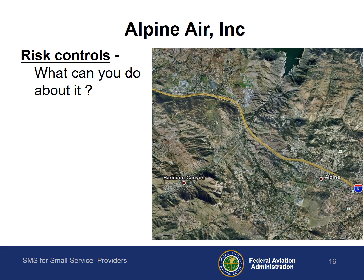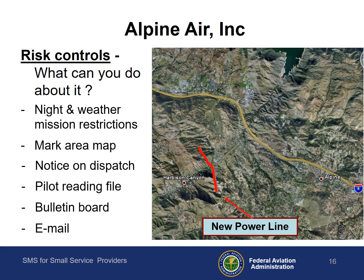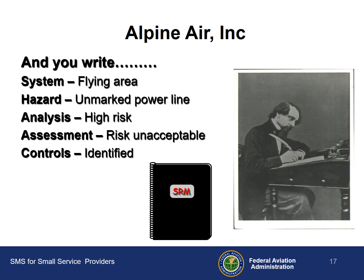Now that you have assessed your risk and found it unacceptable, what can you do to mitigate that risk? The most obvious is putting mission restrictions on flights in or near Harbison Canyon, especially during times of low visibility. You can mark the location of the new power line on the big area map on the wall of your lobby to remind everyone. What else can you do? How about putting reminders everywhere you can think of? Time to bring your documentation up to date. This is a summarized version of what you might have written so far.